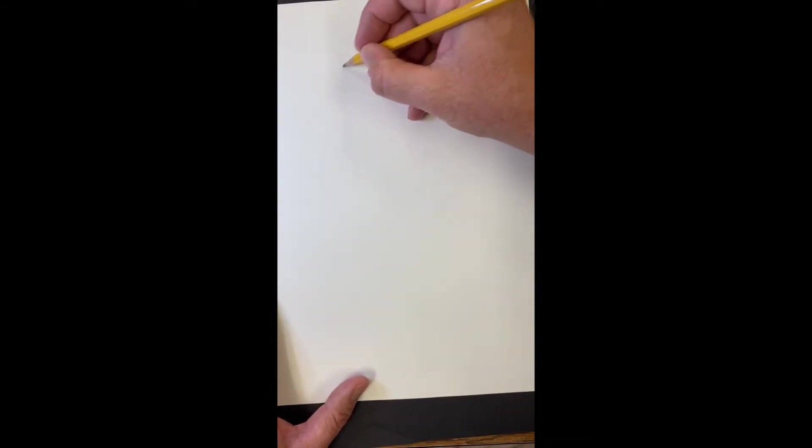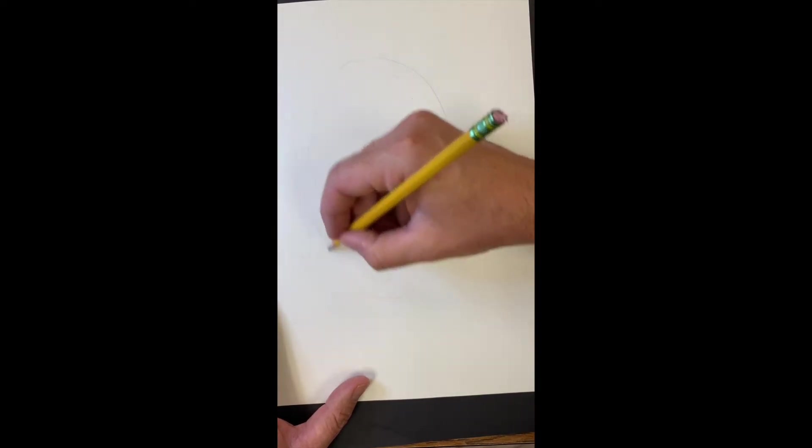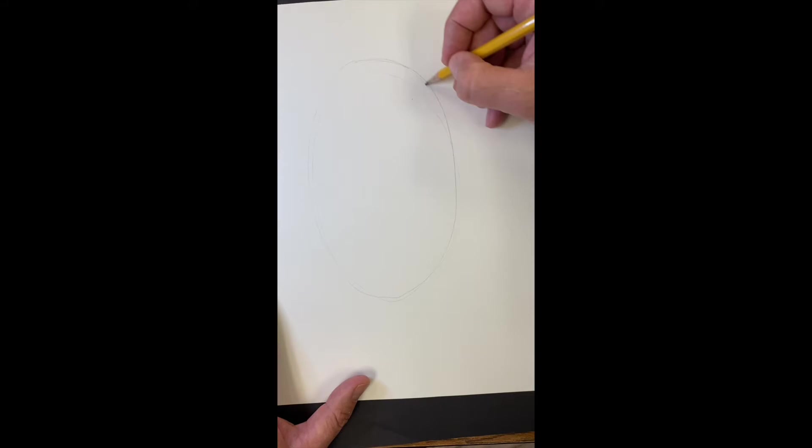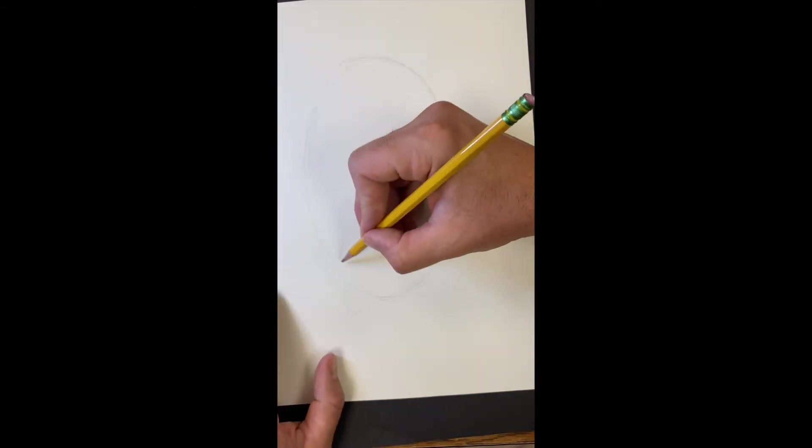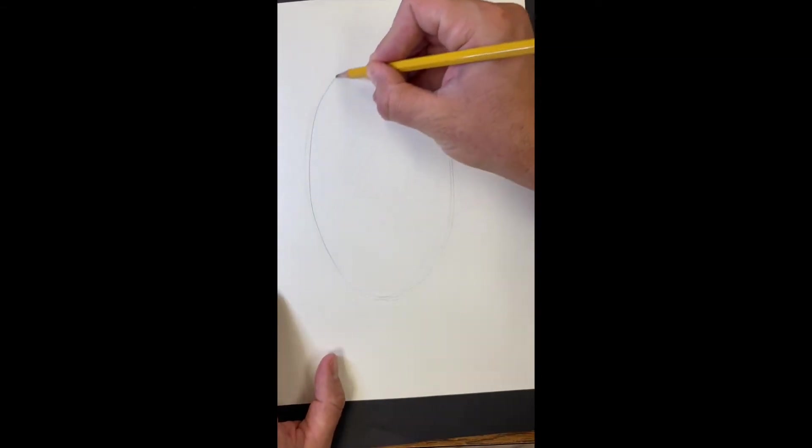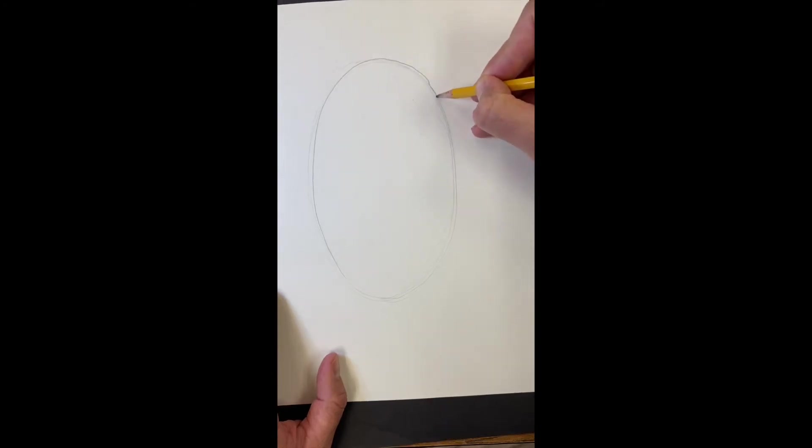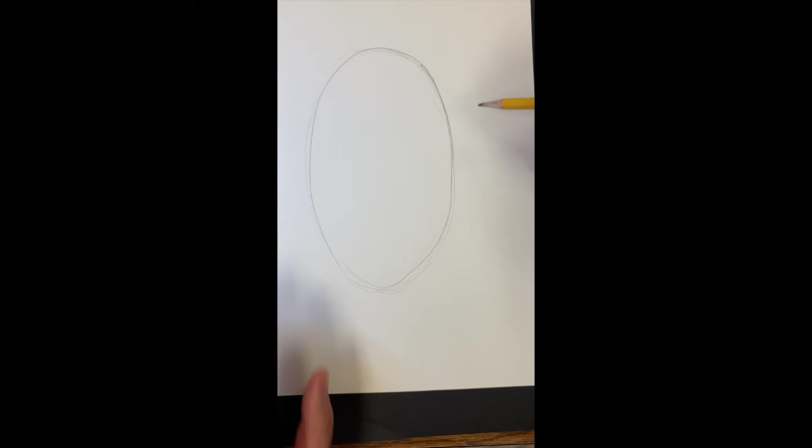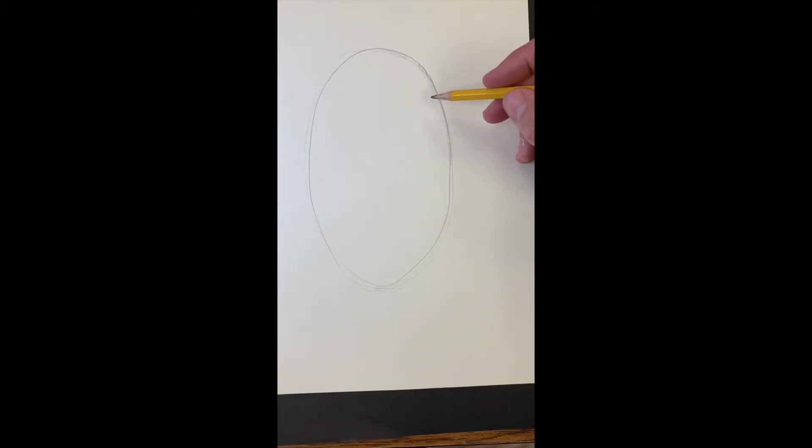I'm going to put in my oval, going around like a car around a racetrack. When I feel happy with my oval, I'll go back and darken it in. So I feel pretty good about this. I'll darken it in. When I put in the hair, I might erase a little bit. I didn't go too dark. I just want you guys to see what I'm doing here.